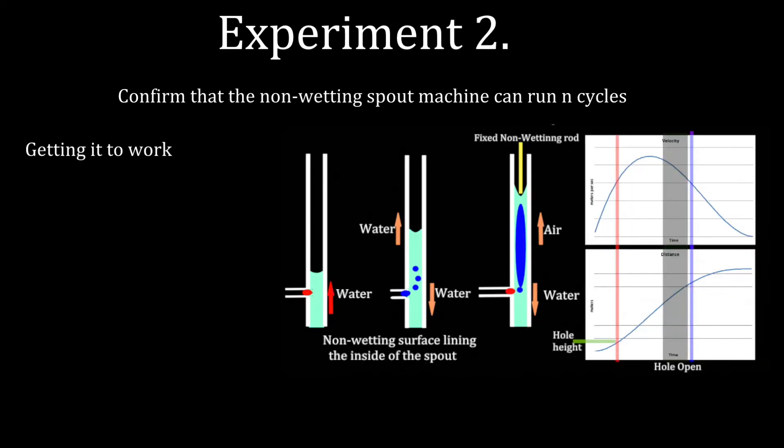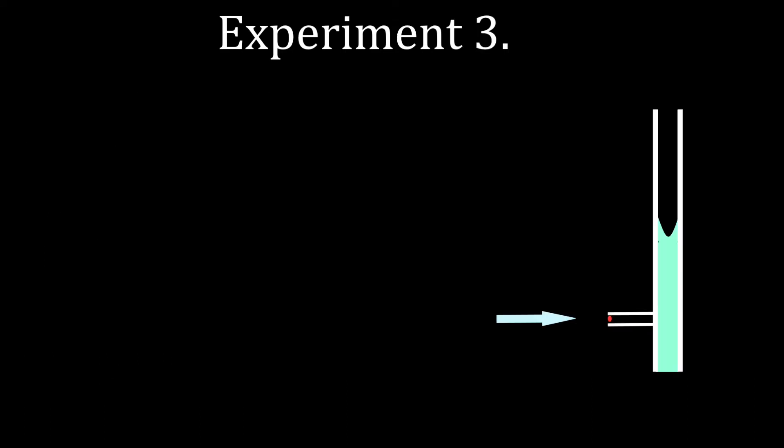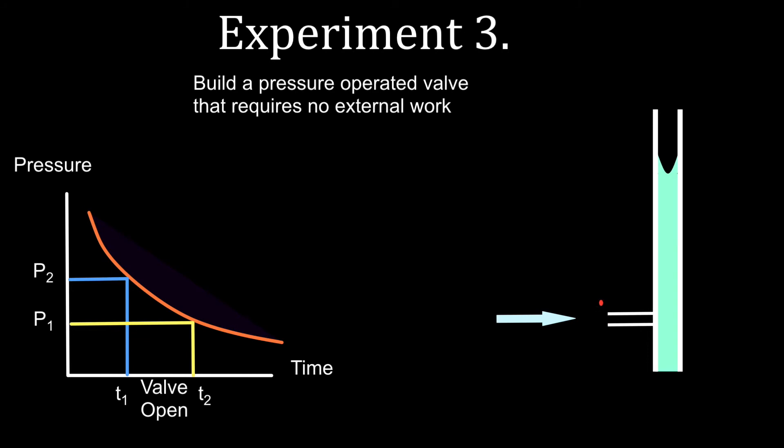The idea is that you secure a capillary rod with non-wetting spout, attempt to manage air inflow so as to obtain a cycle. We do need, of course, the machine to produce work net, so we need a pressure operated valve that needs no external work to actually operate the air inflow once the geometry has been decided.